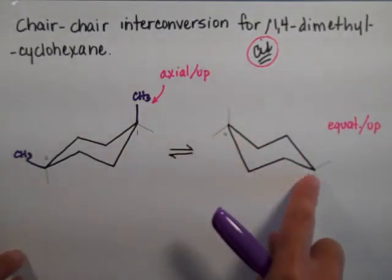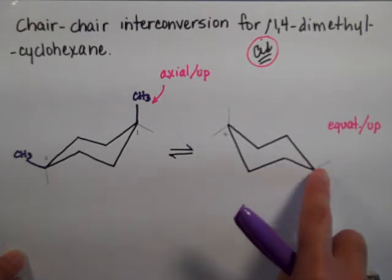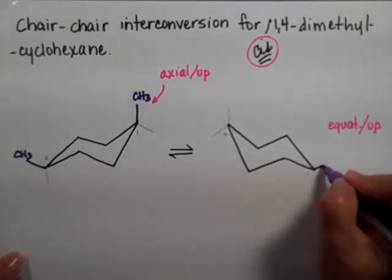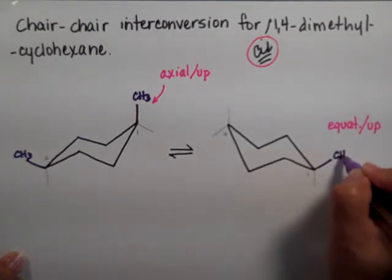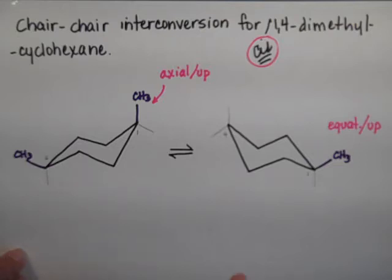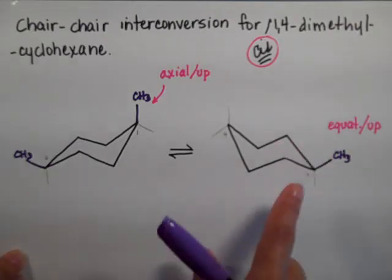So axial up is going to go equatorial up. So whenever I go to my other, my second chair, I'm going to obviously have an equatorial up position right there. If I don't have an equatorial up, I'm in trouble. I am actually probably in the wrong carbon. There has to be an equatorial up.